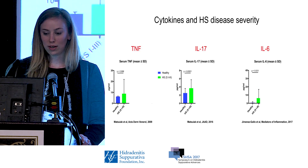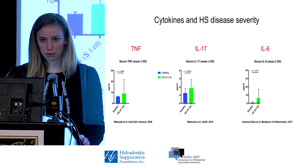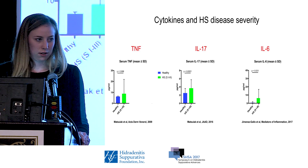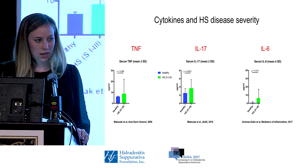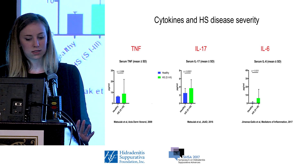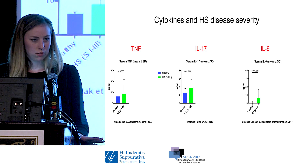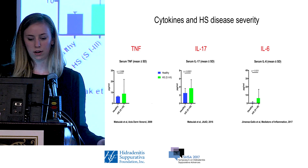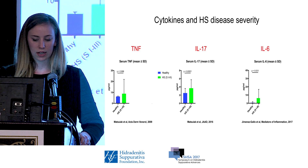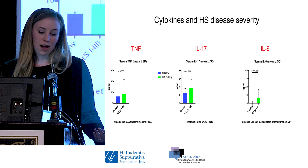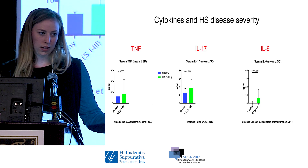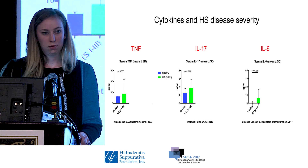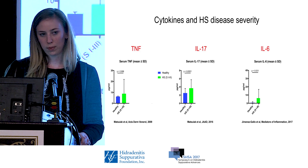Moving to cytokines more familiar to the audience: across the studies reviewed, TNF, IL-17, and IL-6 were all elevated in HS patients compared to healthy controls. Looking at disease severity, Matusiak did not find that TNF levels correlated with disease severity. However, IL-17 was found to be elevated in more severe patients, and this was also true for IL-6.